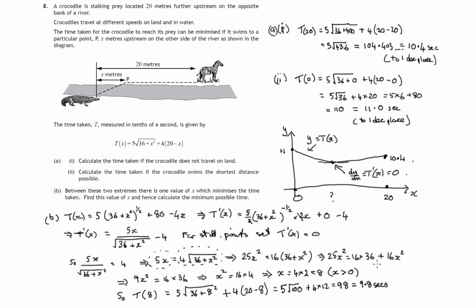And remember this is tenths of a second, so that equals 9.8 seconds. So that is less than the 10.4 and the 11. So the graph now is looking like this: at value x equals 8, we've got a height there of 9.8, which gives the minimum time. So it says find this value of x and hence calculate the minimum possible time. That's the minimum possible time there: 9.8 seconds.